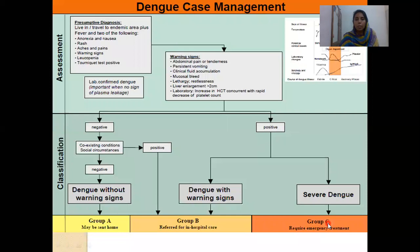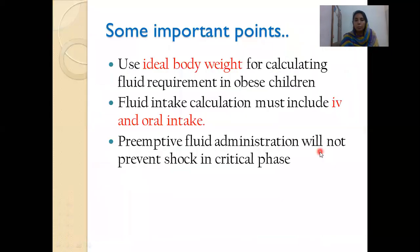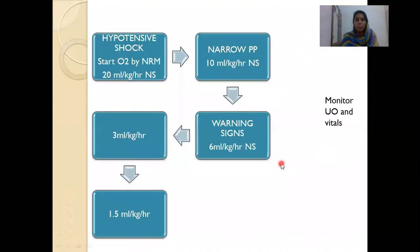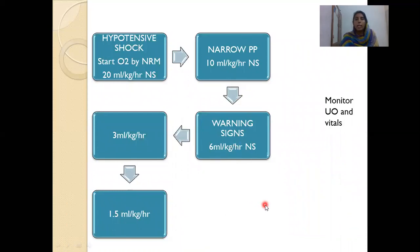To summarize fluid management: hypotensive shock or absent peripheral pulse — start at 20 mL per kg per hour; shift down to 10 mL per kg per hour once pulse is palpable; shift down further to 6, then 3, then 1.5 mL per kg per hour. Any child with warning signs — start at 6 mL per kg per hour. Any child in the febrile phase needing IV fluids due to poor intake — start at 1.5 mL per kg per hour. Titrate all fluids according to urine output.